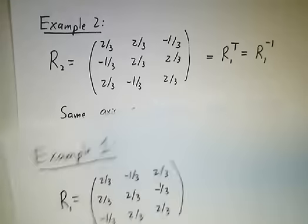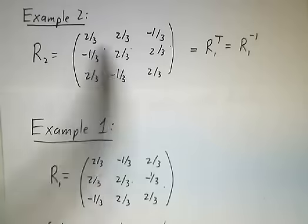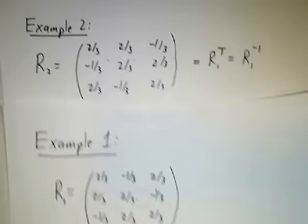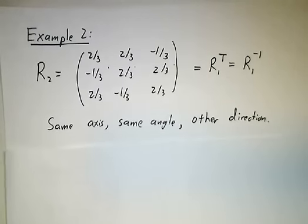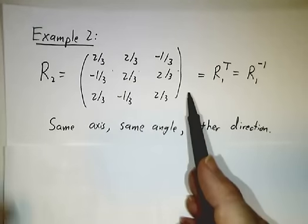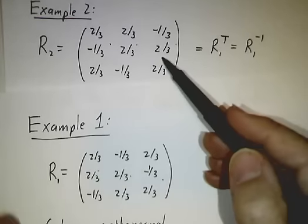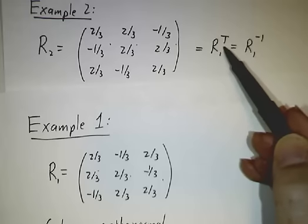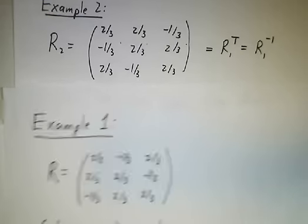Our second example has the same columns as the first, except they've been permuted into a different order. It has the same trace of 2, the same axis, and the same angle — it's just going in the other direction. That means it must be the inverse of the first matrix, and indeed it is: it's the transpose of the first matrix. Since it's orthogonal, the transpose equals the inverse. So the inverse of rotating counterclockwise is rotating clockwise.